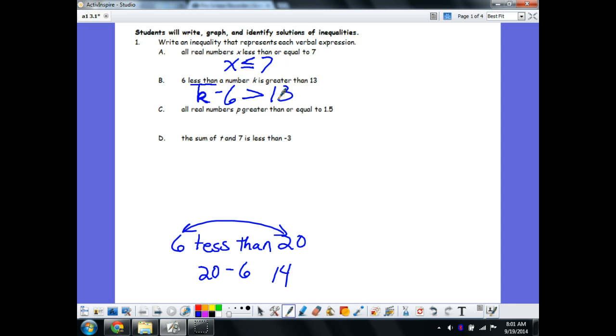And part C: all real numbers p that are greater than or equal to 1.5. So p greater than or equal to 1.5.